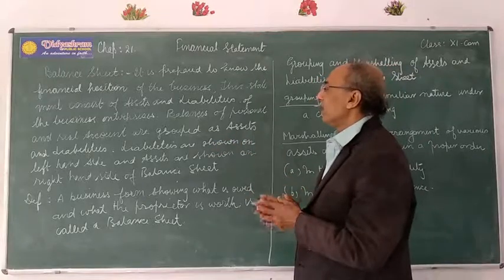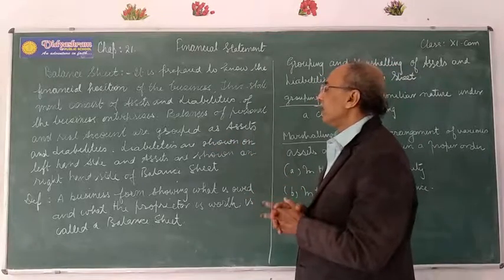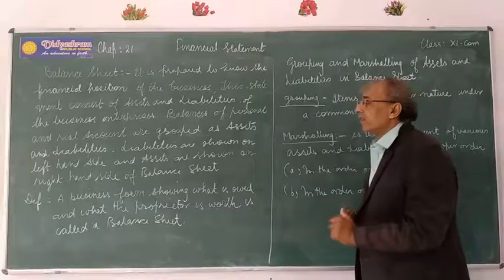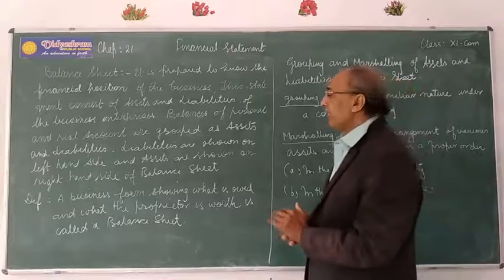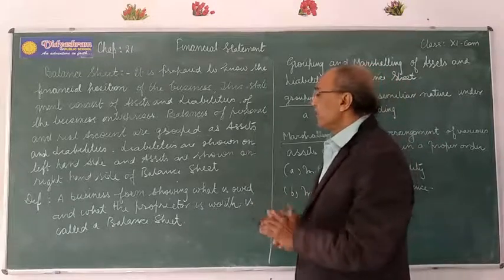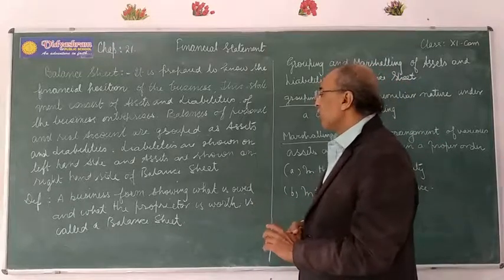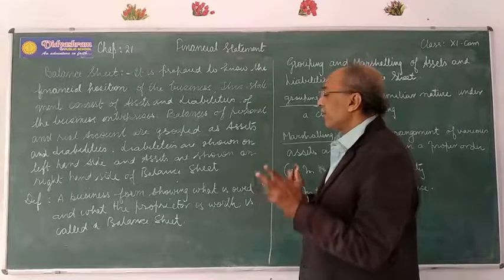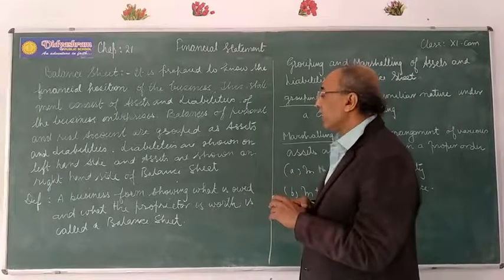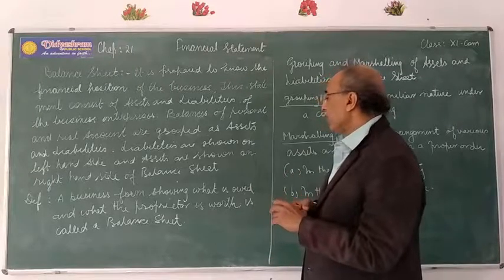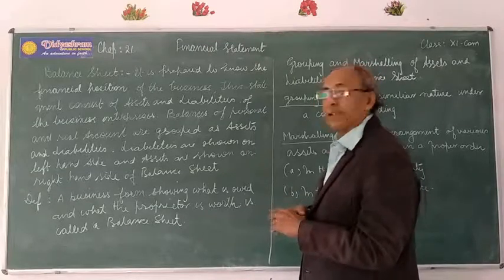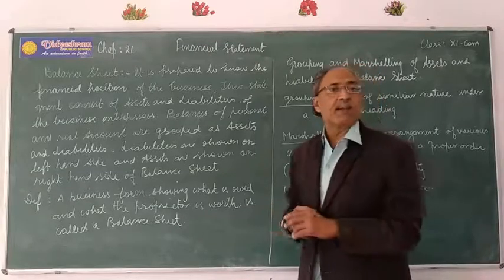Liabilities are on the left-hand side, and assets are also on the left-hand side. Now, the definition: the balance sheet is a business form showing what is owed — what is our management and property, and what is the net worth. That is the balance sheet.